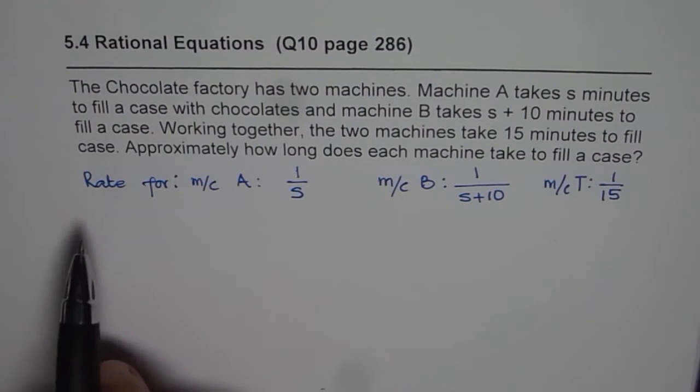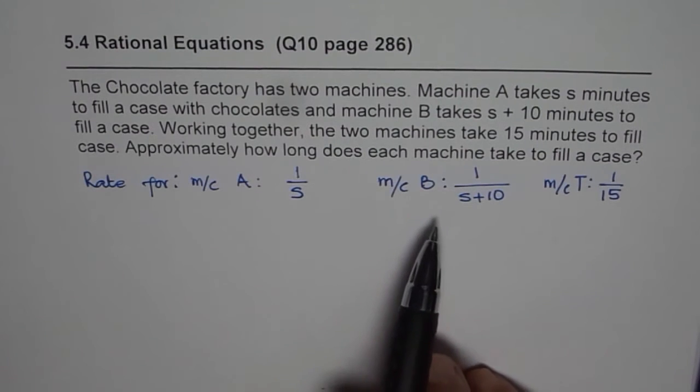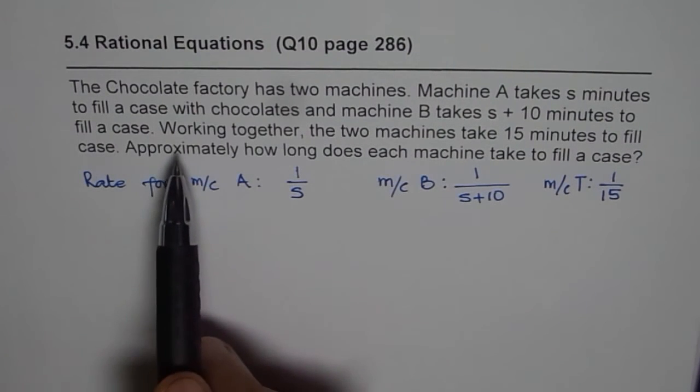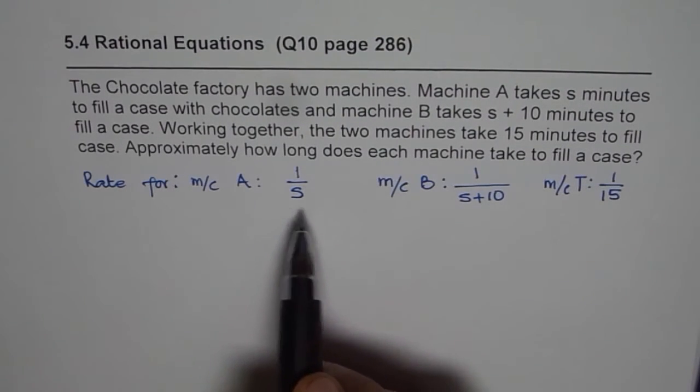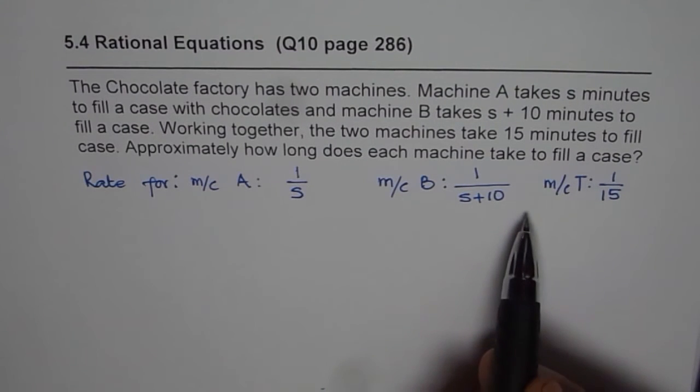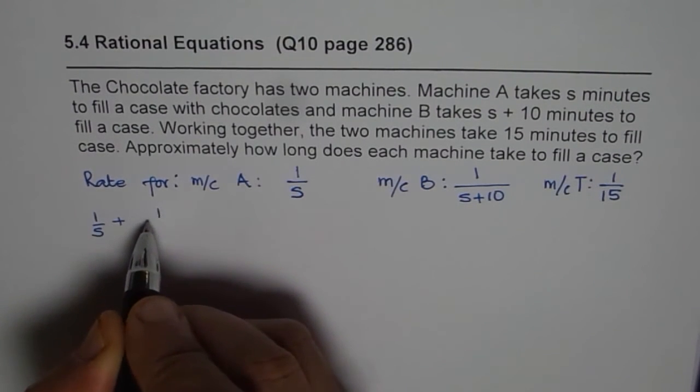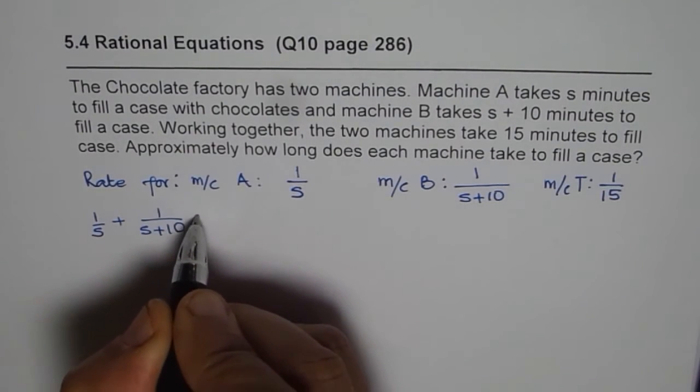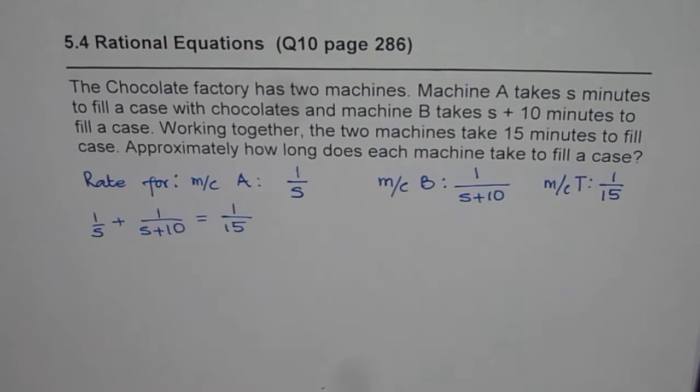So that is how you can get rate for each thing. Kind of very simple to understand now. Now we can equate them. Since the statement is working together the two machines take 15 minutes, that means if I combine their rates I should get 1 over 15. That gives me my equation to solve. So the equation is 1 over s plus 1 over s plus 10 equals to 1 over 15. So we get a rational equation to solve.